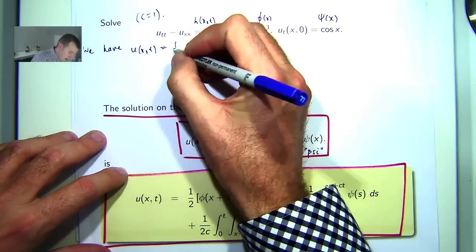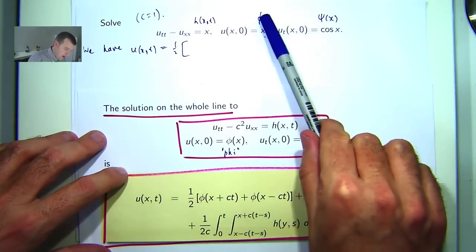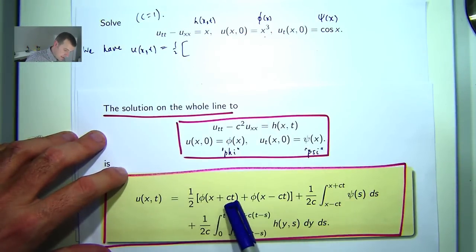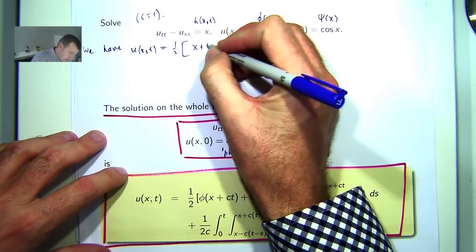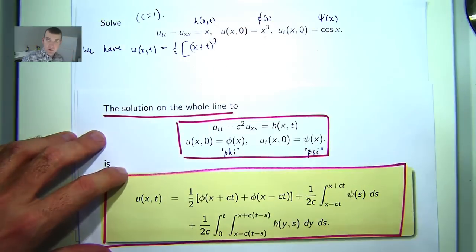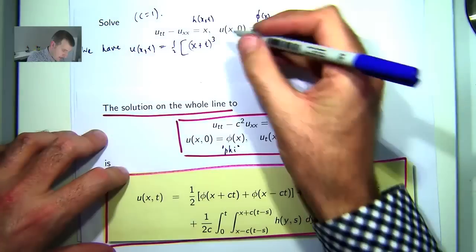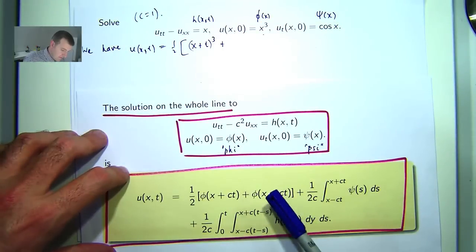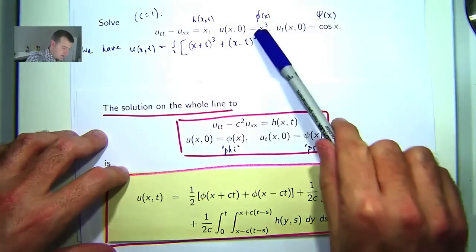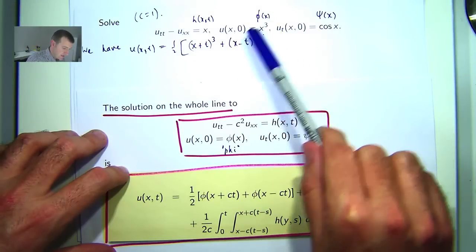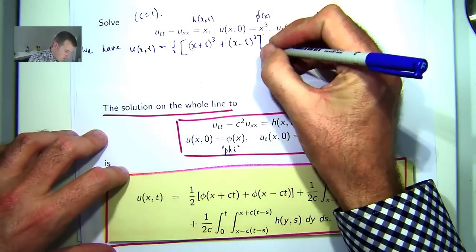Alright, so it's going to be half phi evaluated at x plus ct, so c is 1 in this case. So it's going to be x plus t cubed plus phi evaluated at x minus ct, in our case x minus t, all cubed. So we replace x with x plus t in brackets, replace x with x minus t, all in brackets.